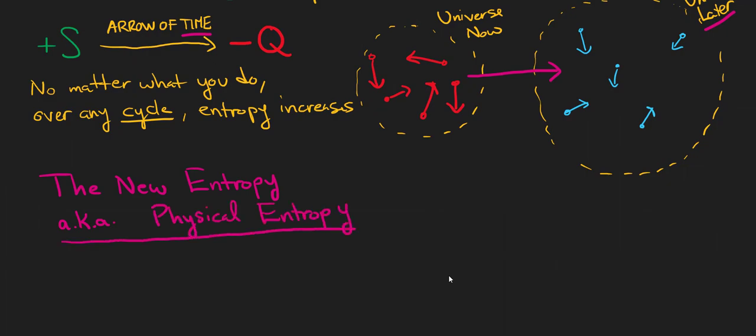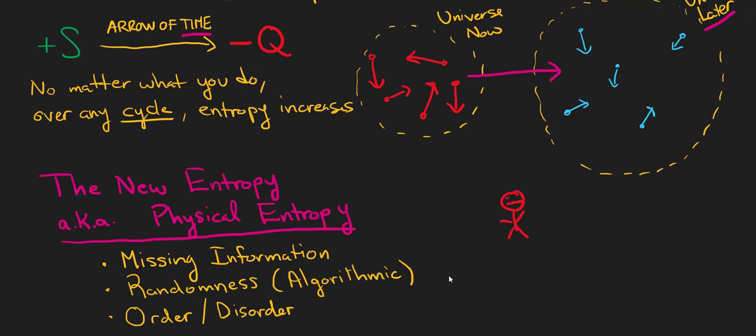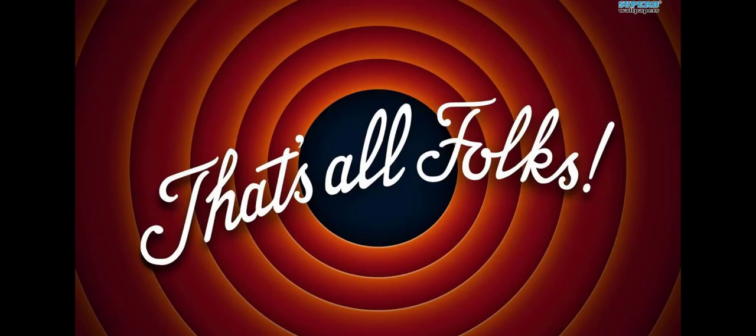However, entropy is also trapped in missing information. Now classical views of entropy, like Maxwell's demon was generated from, they don't care about missing information. They just care about order, disorder, and entropy. And that's all there is to it.